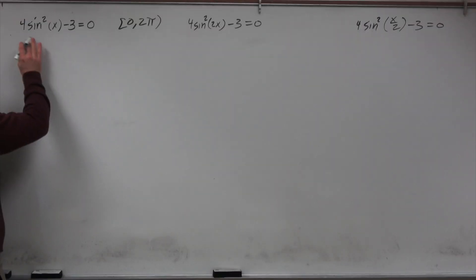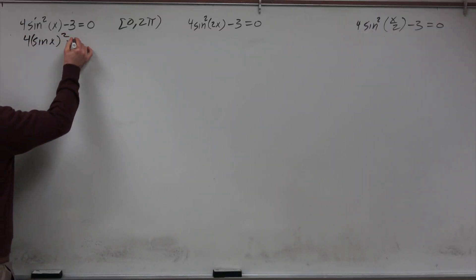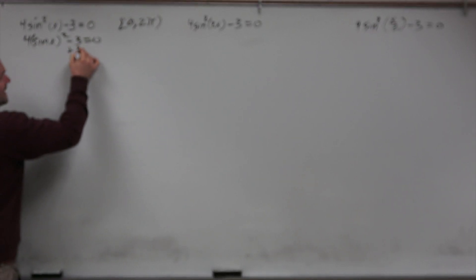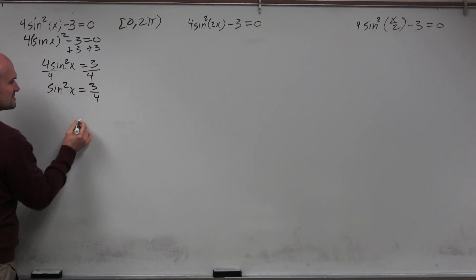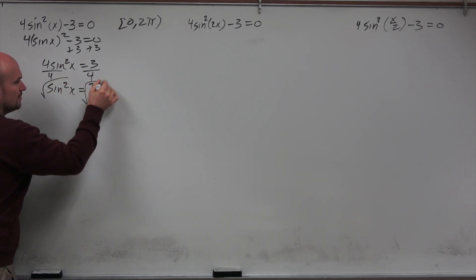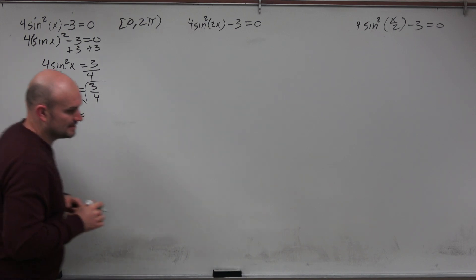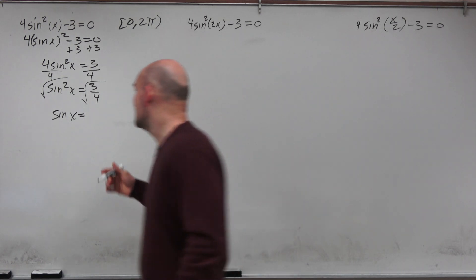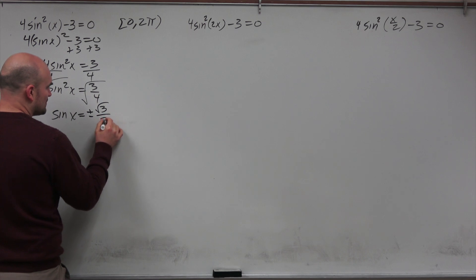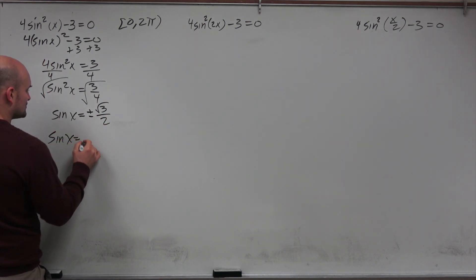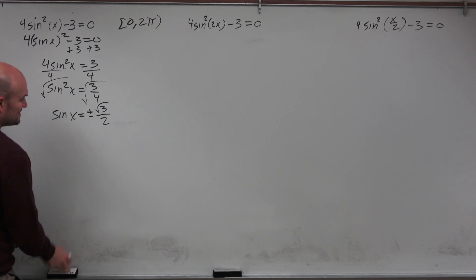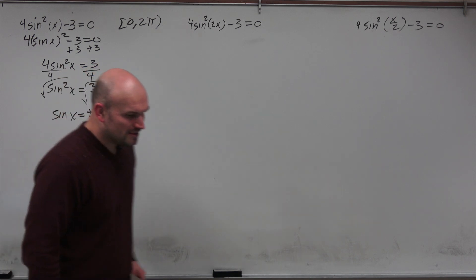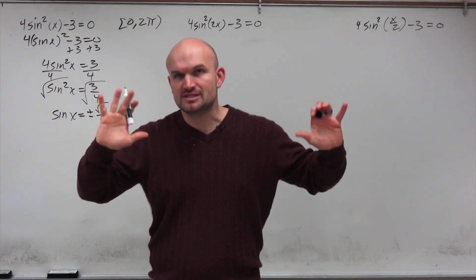To isolate sine of x, note that sine squared of x can be rewritten as (sin x)². Add 3 to both sides, giving 4 sine squared of x equals 3. Divide by 4 to get sine squared of x equals 3/4. Now take the square root of both sides — remember to include plus or minus. Distributing the square root gives sine of x equals plus or minus the square root of 3 over 2, since the square root of 4 is 2.